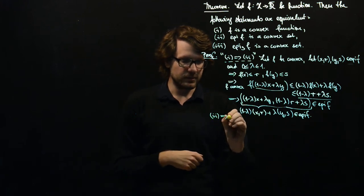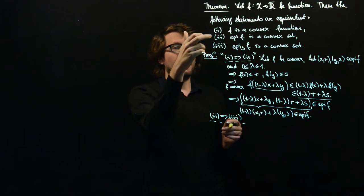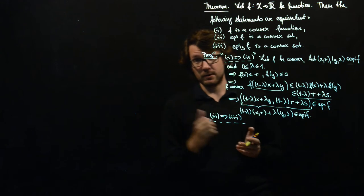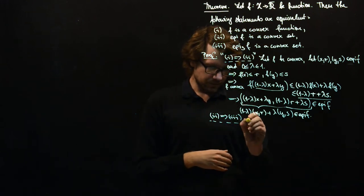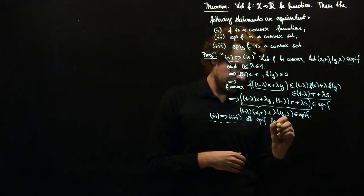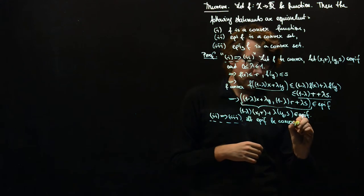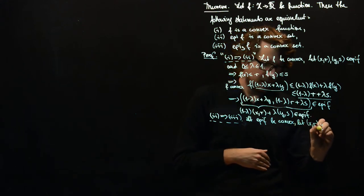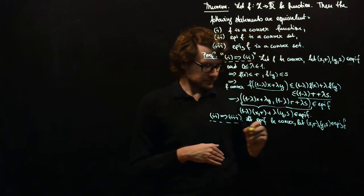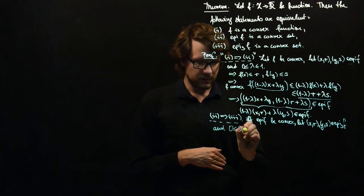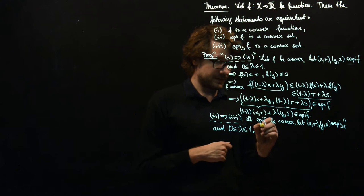Next step is the direction from 2 to 3. We assume that the epigraph of f is a convex set and want to show that the strict epigraph of f is also a convex set. Let epi(f) be convex, and let (x,r) and (y,s) be in the strict epigraph of f, and let lambda be between 0 and 1. We have to prove that the convex combination is also in the strict epigraph.